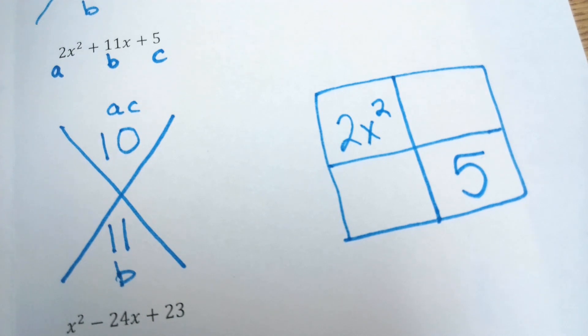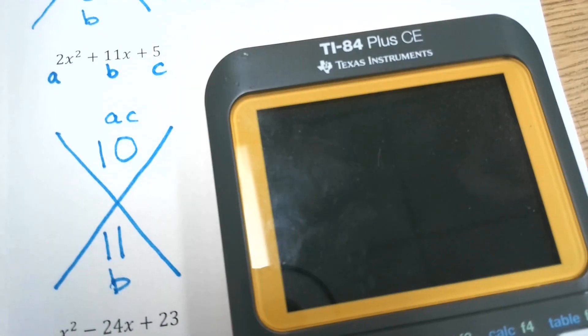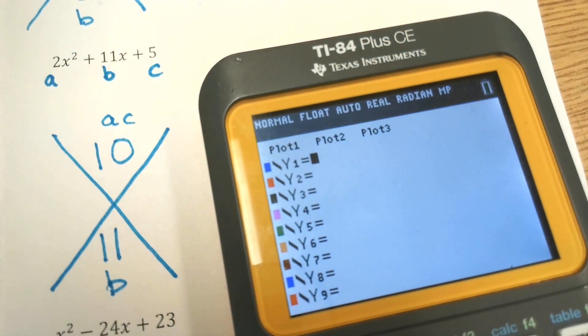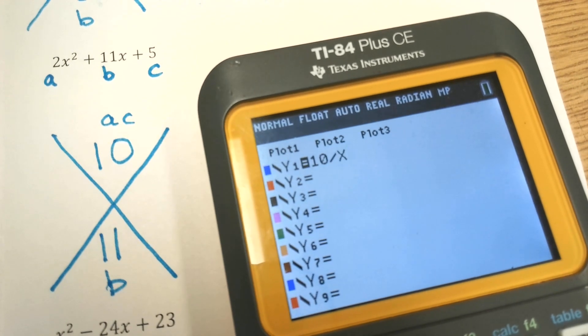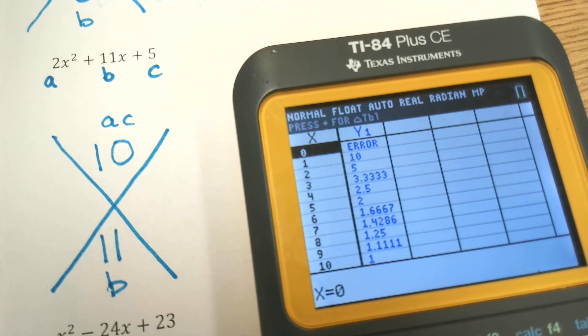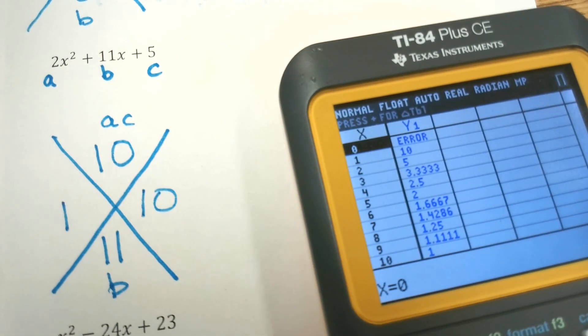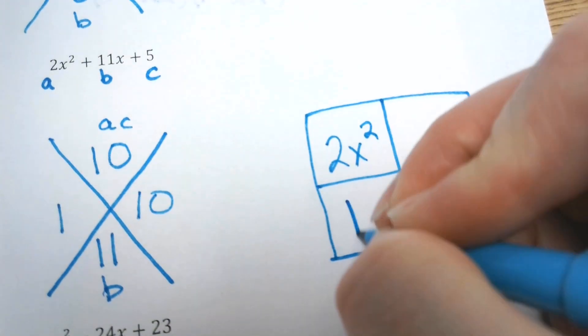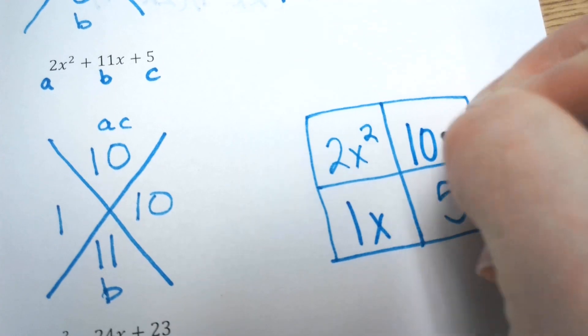So we're looking for the factors of 10 that add to get 11. Notice that they're all positive. So our magic numbers will be positive. So if you're not sure of the factors of 10, put them in: y = 10/x. And this helps you look at all your factors to see which ones will add to equal 11. Look at them. 1 and 10. 1 times 10 is 10, 1 plus 10 is 11. Go ahead and put your magic numbers in your diagonals.